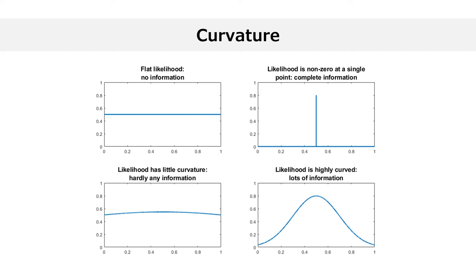In the left intermediate case, the likelihood is almost flat — it has very little curvature. All the parameter values have similar, although not identical, likelihoods, so the data provides hardly any information. In the right intermediate case, the likelihood is highly curved — some parameter values are much more likely than others, and the data provides a lot of information.